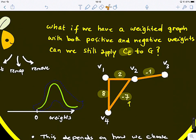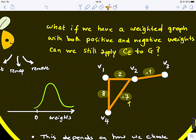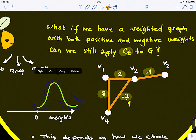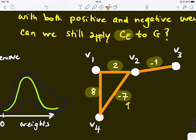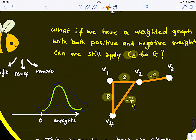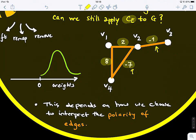This is an undirected but weighted graph. If you put -7 on an edge, it's still undirected. We want to find the central nodes, and whether we shift values or take absolute values depends on how you define and interpret those weights. This depends on how we choose to interpret the polarity of edges — whether it's important to preserve, or something you can overlook.